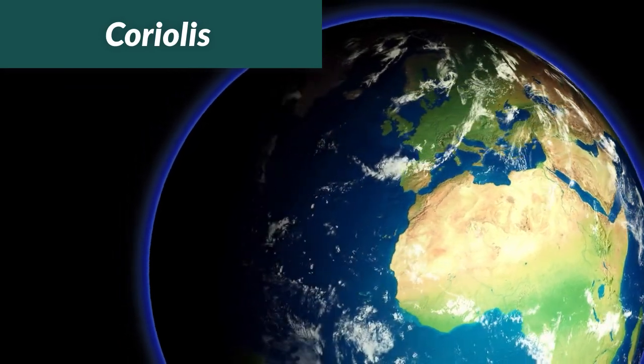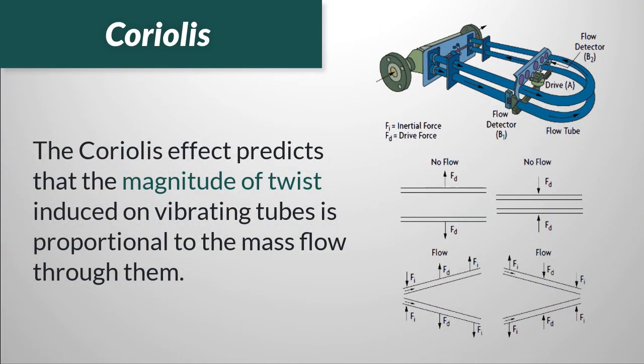When mass flows through a vibrating tube, Coriolis forces will tend to twist the tubing. By measuring the magnitude of displacement caused by this twisting force, the Coriolis meter can directly calculate mass flow rate.